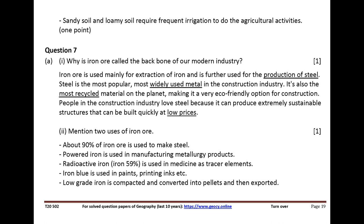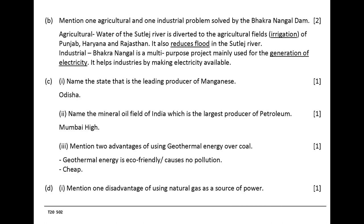Low-grade iron is compacted and converted into pellets and then exported. Mention one agricultural and one industrial problem solved by the Bhakra Nangal Dam. Agricultural: water of the Sutlej River is diverted to the agricultural fields of Punjab, Haryana and Rajasthan. It also reduces flooding in the Sutlej River. Industrial: Bhakra Nangal is a multi-purpose project mainly used for the generation of electricity. It helps industries by making electricity available.